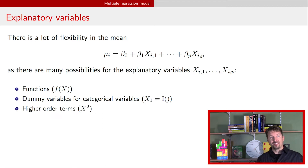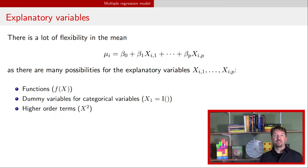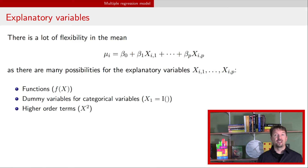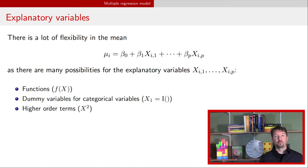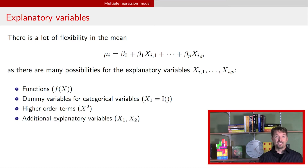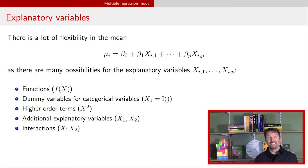We're going to talk about something generally referred to as higher order terms. In particular we're first going to be looking at functions of a single explanatory variable in terms of squared and cubic terms. We're going to talk about adding additional explanatory variables into our model. And then in the next video we'll introduce the idea of interactions where you take your explanatory variables and multiply them.